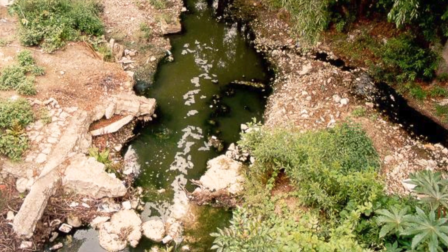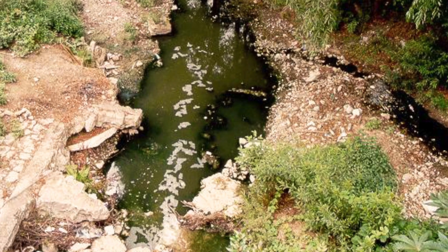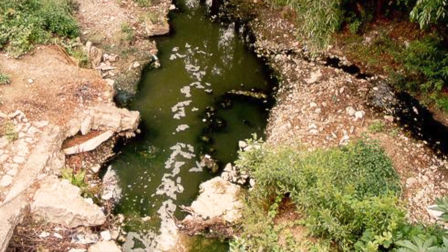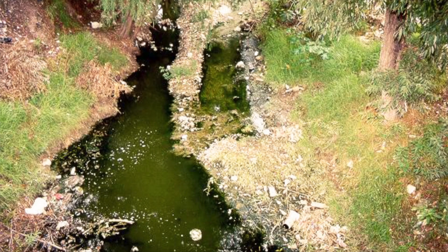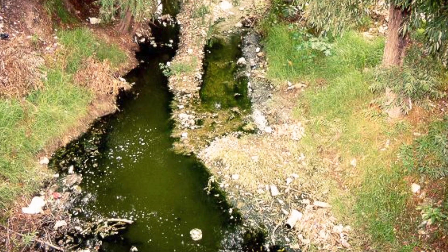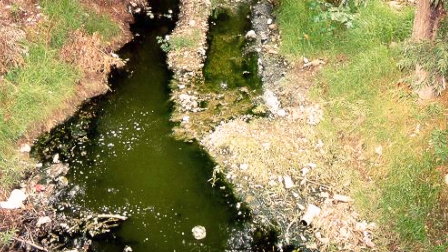The differential equation for oxygen supply in a stream may be modeled as follows. Using the chain rule, the oxygen supply equation is converted to the spatial domain.